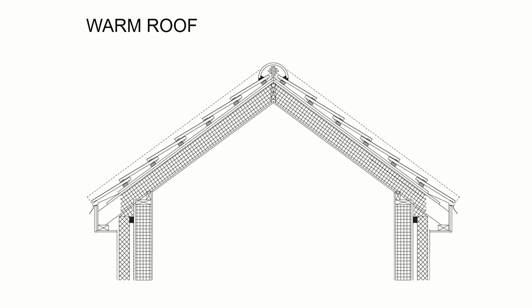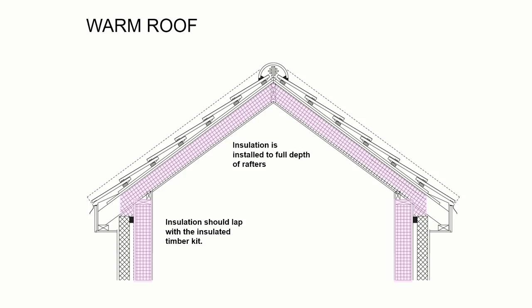Looking at a warm roof construction — a simple example with a pitch going up and back down, timber frame with blockwork or brickwork on the outside and tiles on the roof. The insulation is installed to the depth of the rafters and between them, in the same way that we have timber studs with insulation between them. We need to ensure the insulation from the roof laps with that of the timber kit so there are no cold bridges, bringing it down to create double depth at that junction.